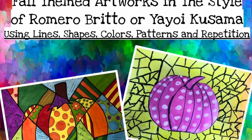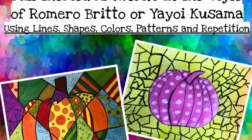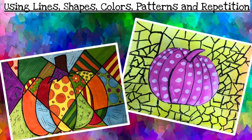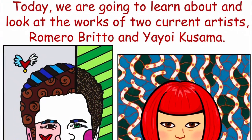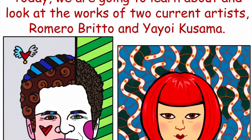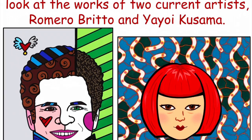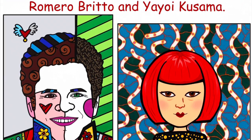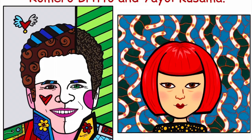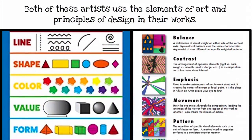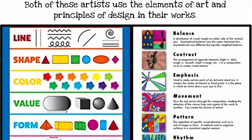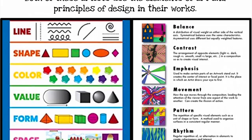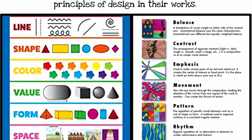Today we are going to do fall themed artworks in the style of Romero Britto or Yayoi Kusama. First we're going to learn a little bit about both of them. They are both current artists that are still creating today. Both of these artists use the elements of art and the principles of design which we've discussed in class, like line,